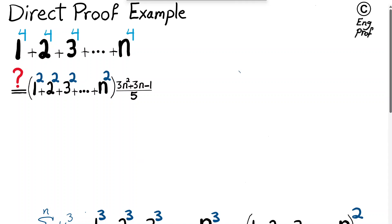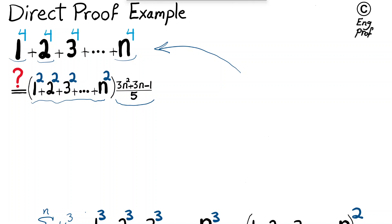This video shows a quick proof for this interesting property of the first consecutive integers: 1 to the power 4 plus 2 to the power 4 up to n to the power 4 is equal to the sum of the squared integers 1 squared plus 2 squared up to n squared, times 3n squared plus 3n minus 1, divided by 5. So this is very interesting — how is this possible?